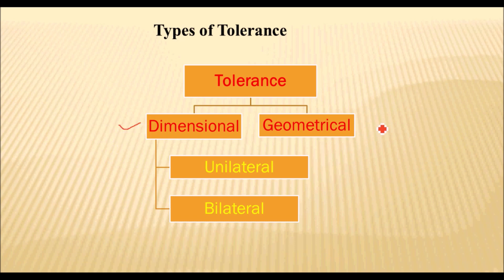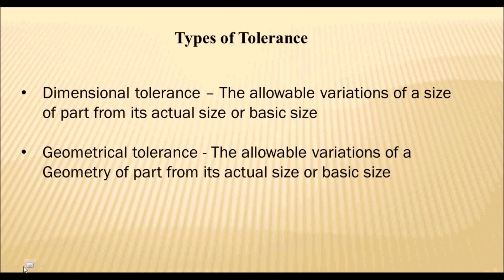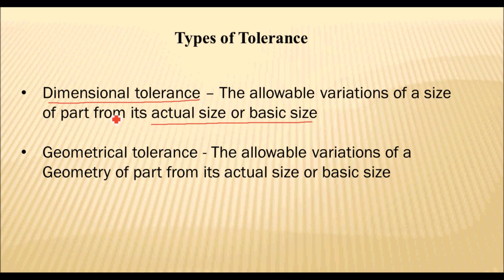There are two types of tolerance: dimensional tolerance and geometrical tolerance. Dimensional tolerance can be classified as unilateral tolerance and bilateral tolerance. Dimensional tolerance is due to dimensional variations in a part. The allowable variation of the size of a part from its actual or basic size is called dimensional tolerance.